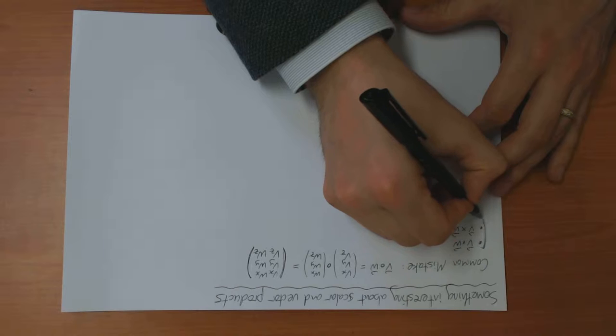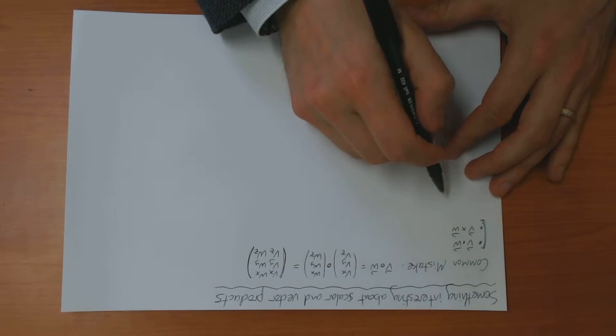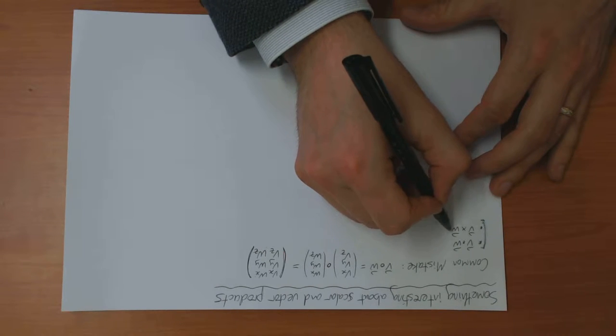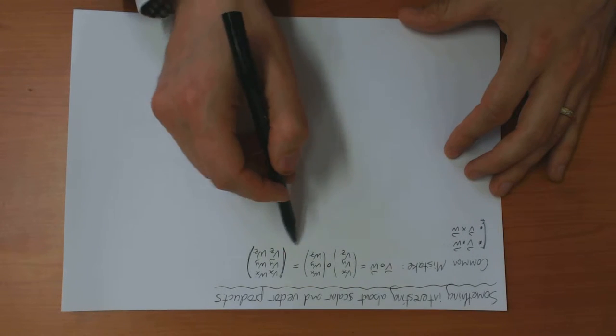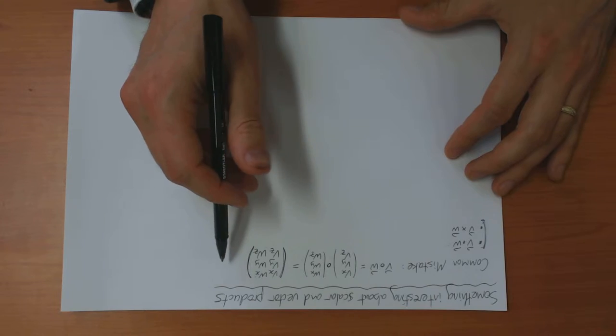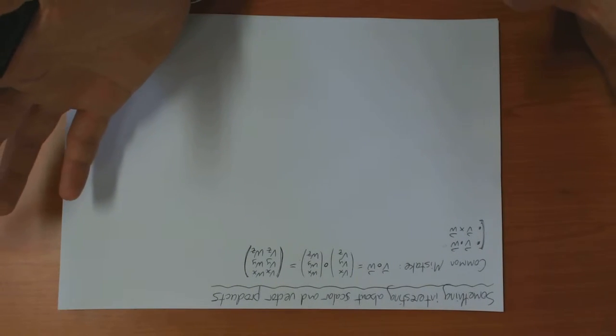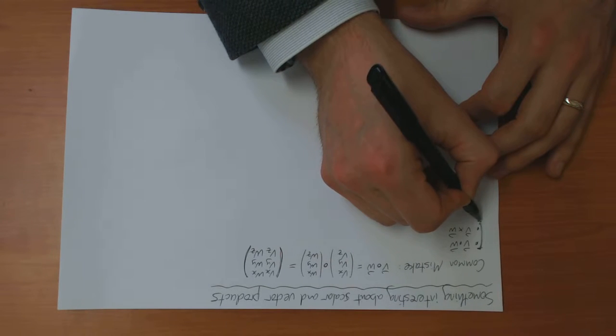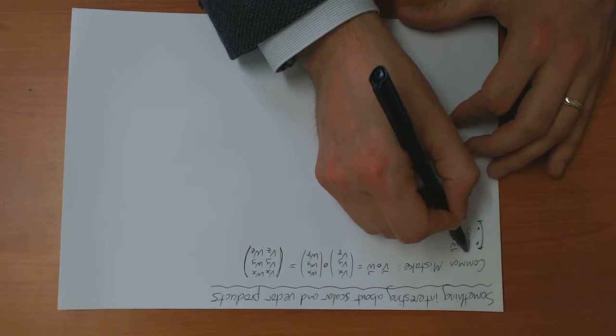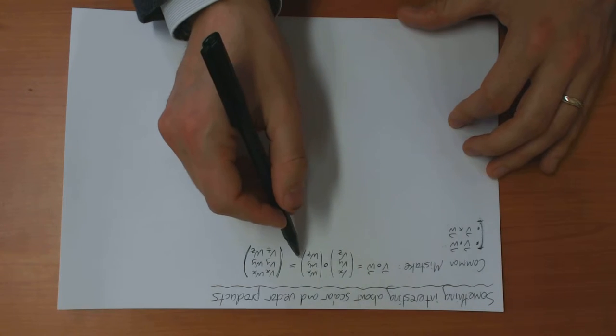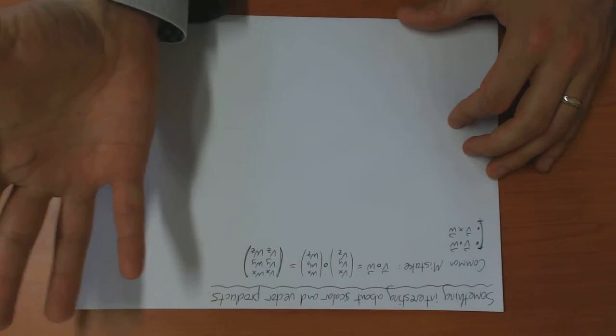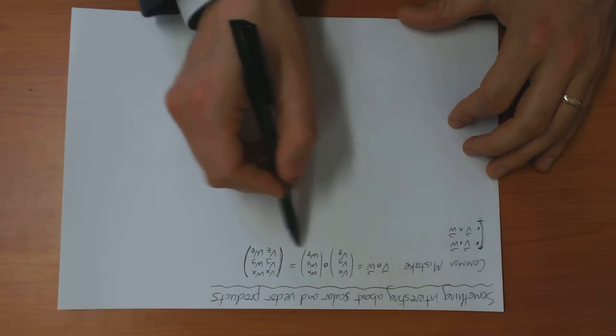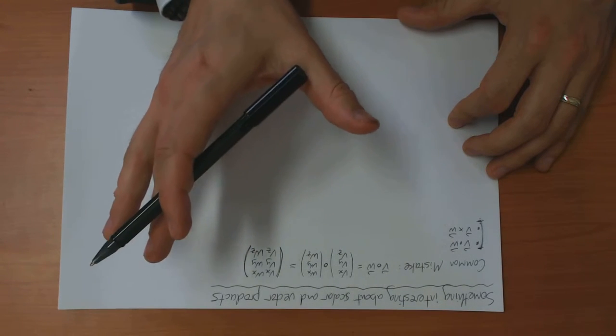Now, I think for quite a few of you, the answer might just be that this is what you've been taught. So from high school, you've learned to multiply vectors like this, and you've never learned to multiply them like this. But that's not a very good answer. You shouldn't trust your teachers that much.